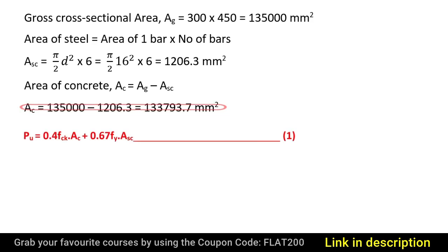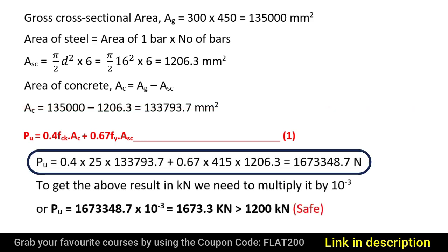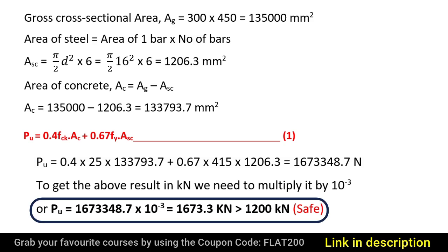Substituting all these values in the formula, we get PU = 0.4 × FCK (25) × AC (133,793.7) + 0.67 × FY (415) × ASC (1206.3). On simplifying, PU equals 1,673,348.7 N. To convert this to kN, we multiply by 10⁻³, giving PU = 1673.3 kN. This is greater than 1200 kN, which is the actual load carried by the column, hence satisfying the criteria.